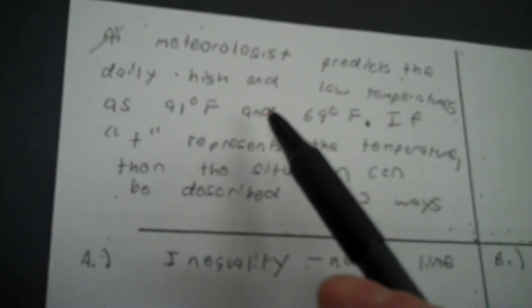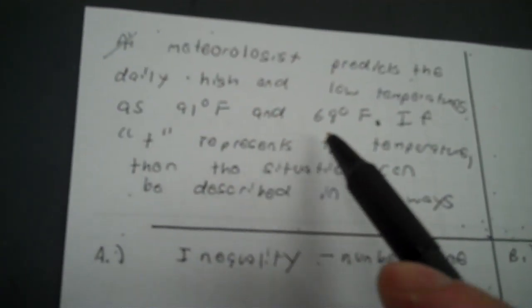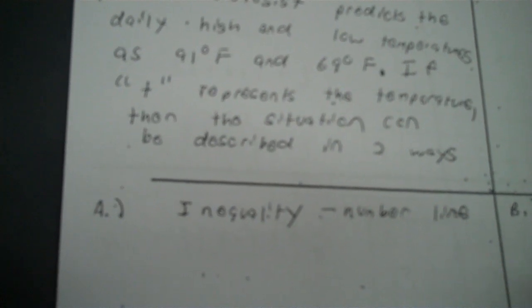A meteorologist predicts the daily high and low temperatures is 91 degrees Fahrenheit and 69 degrees Fahrenheit. If T, variable T, represents the temperature, then the situation can be described in two ways.